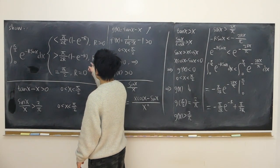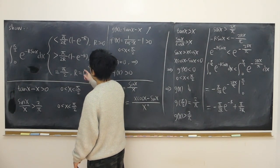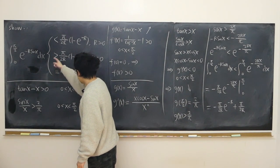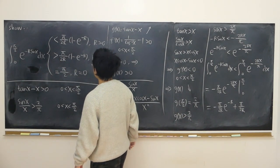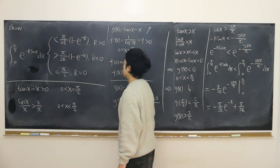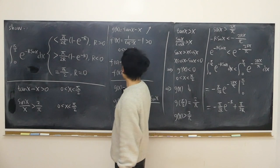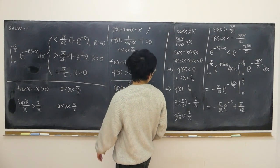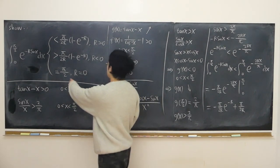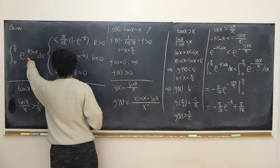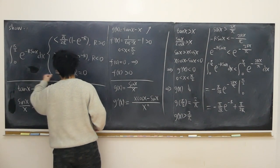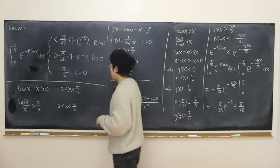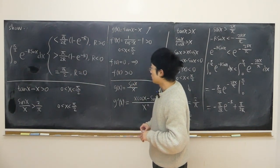So I'm done with this part when r is positive. For the same reason, we can easily verify that this is also true when r is negative. When r is equal to 0, the integral from 0 to half pi is just the integral of dx, which is easily just half pi. So I'm done.